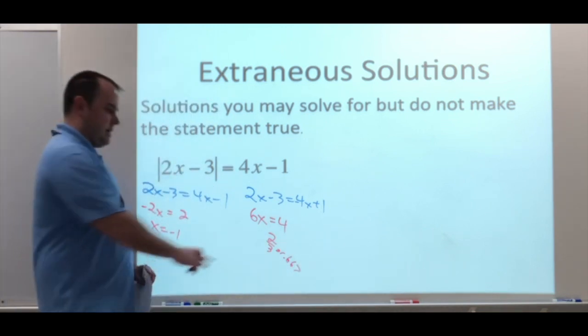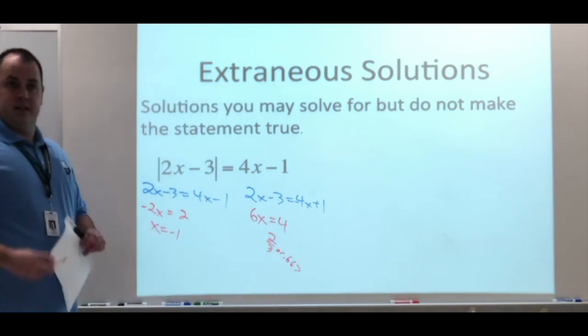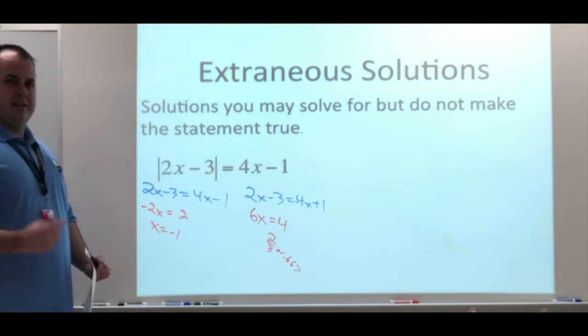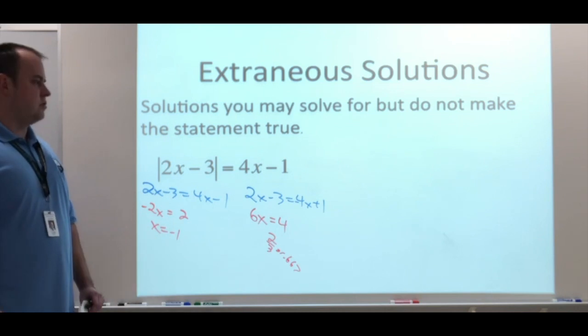I suggest using the fraction, the 2 over 3. We're not going to be using the decimal; that will give us the exact values instead of the rounding value of 0.667. Using the exact value always gives you a better solution.